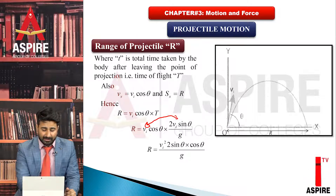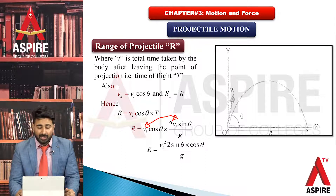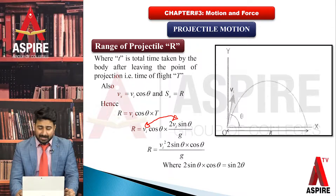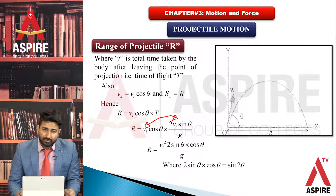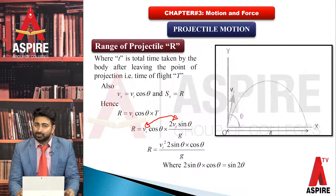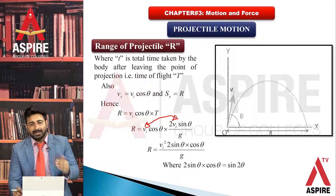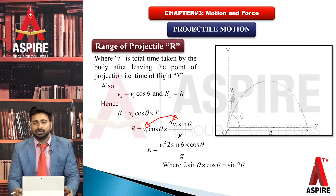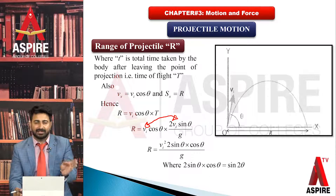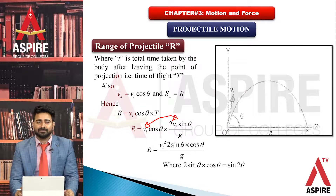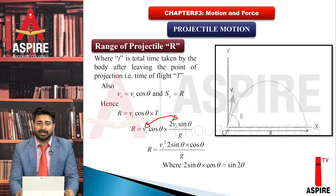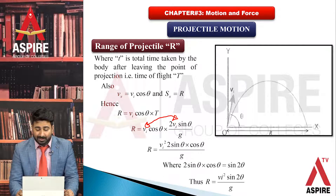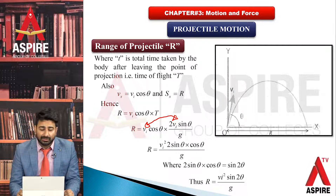When talking about the full range, the time taken is the time of flight T. So r = vi cosθ × T. Plugging in the time of flight formula, and since vi multiplies vi we get vi², the final formula becomes R = vi² · 2sinθ cosθ / g. Using the trigonometric identity 2sinθ cosθ = sin2θ, the final range of projectile formula is R = vi² sin2θ / g.